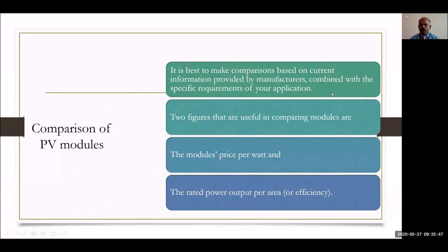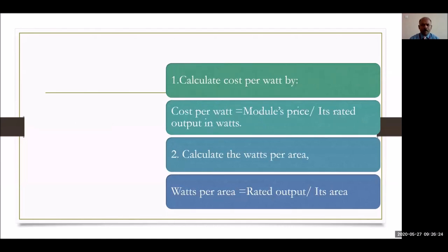To size the PV modules, different sizes will produce different amounts of power based on efficiency. Monocrystalline efficiency is higher compared to polycrystalline. Two useful figures for comparing modules are: modules price per watt and rated power output per area (efficiency-based). Calculate cost per watt as module price divided by its rated output in watts. Calculate watts per area as rated output divided by its area.